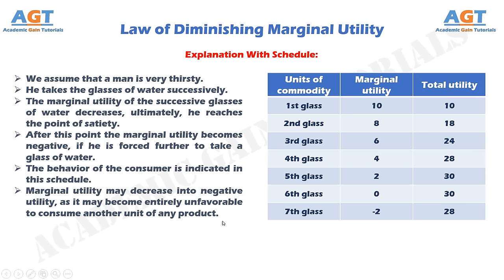The law of diminishing marginal utility directly relates to the concept of diminishing prices. As the utility of a product decreases as its consumption increases, consumers are willing to pay smaller dollar amounts for more of the product. For example, assume an individual pays $100 for a vacuum cleaner. Because he has little value for a second vacuum cleaner, the same individual is willing to pay only $20 for a second one. The law of diminishing marginal utility directly impacts a company's pricing because the price charged for an item must correspond to the consumer's marginal utility and willingness to consume or utilize the good.